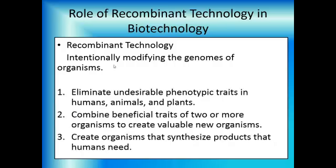Here are the goals of recombinant technology. First: eliminate undesirable phenotypic traits in humans, animals, and plants. So far we have had success in eliminating a genetic disease called severe combined immunodeficiency disease, also known as the Bubble Boy Syndrome, by taking the gene that makes the product that these people need and inserting it into their cells. Second: combining beneficial traits of two or more organisms to create a valuable new organism — such as combining lettuce and radishes.